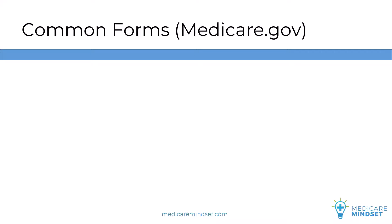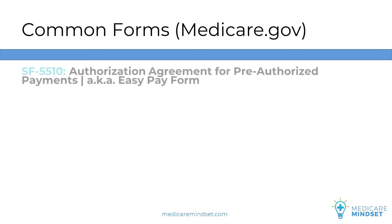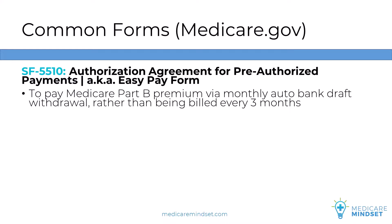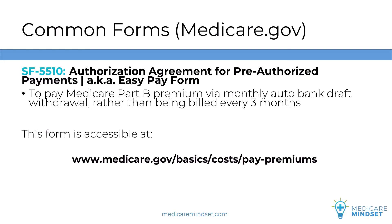We have one final form located on the Medicare.gov website. It's called SF-5510, the Authorization Agreement for Pre-Authorized Payments, also known as the EasyPay form. This is for those who are not receiving Social Security benefits and prefer to pay their Medicare Part B premiums monthly via auto bank draft rather than a paper invoice every three months. The form, instructions, and all the different ways to pay Medicare premiums are detailed online at medicare.gov/basics/costs/pay-premiums.